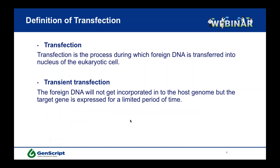I would like to start my talk with the definition of transfection. So what is transfection? Transfection is the process during which foreign DNA is transferred into the nucleus of a eukaryotic cell. There are two types of transfection: stable transfection and transient transfection. Today we will only focus on transient transfection. During transient transfection, the foreign DNA will not get incorporated into the host genome, but the target gene is expressed for a limited period of time.